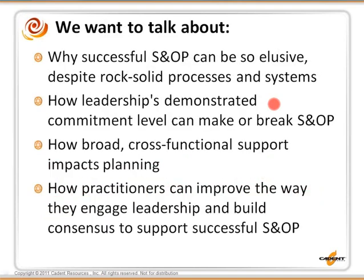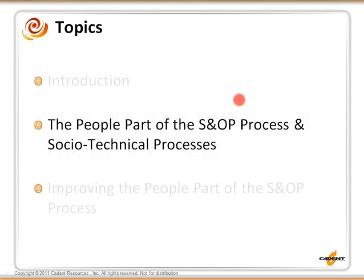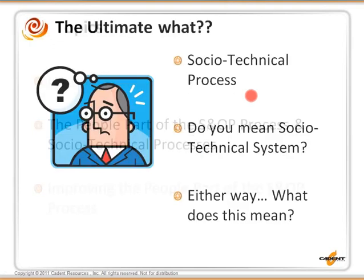We want to talk about why successful S&OP can be so elusive despite rock-solid processes and systems, how leadership's demonstrated commitment level can make or break an S&OP, how broad cross-functional support impacts planning, and how practitioners can improve the way they engage leadership and build consensus to support a successful S&OP. So we want to talk about the people part of sales and operations planning, in the context of what we call a socio-technical process. Sales and operations planning is the ultimate socio-technical process.